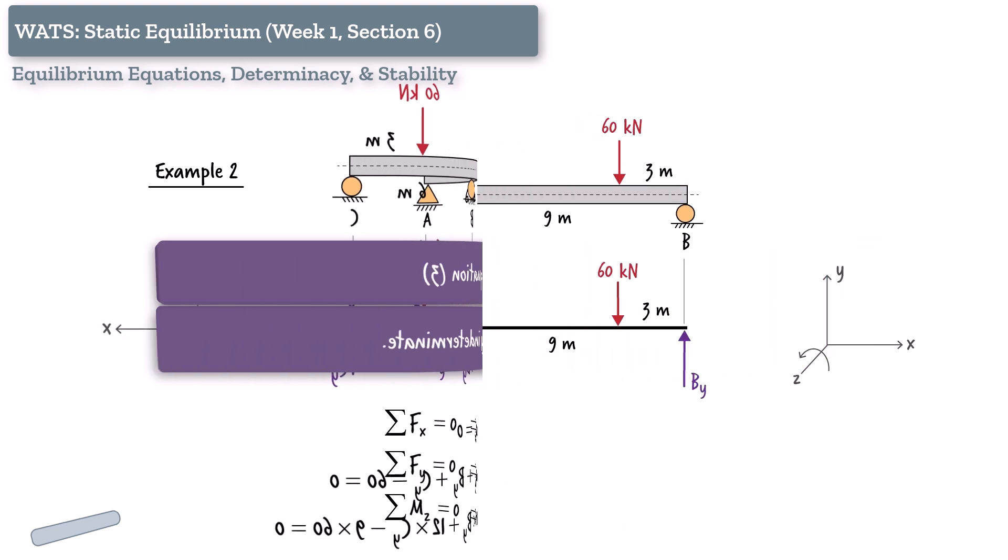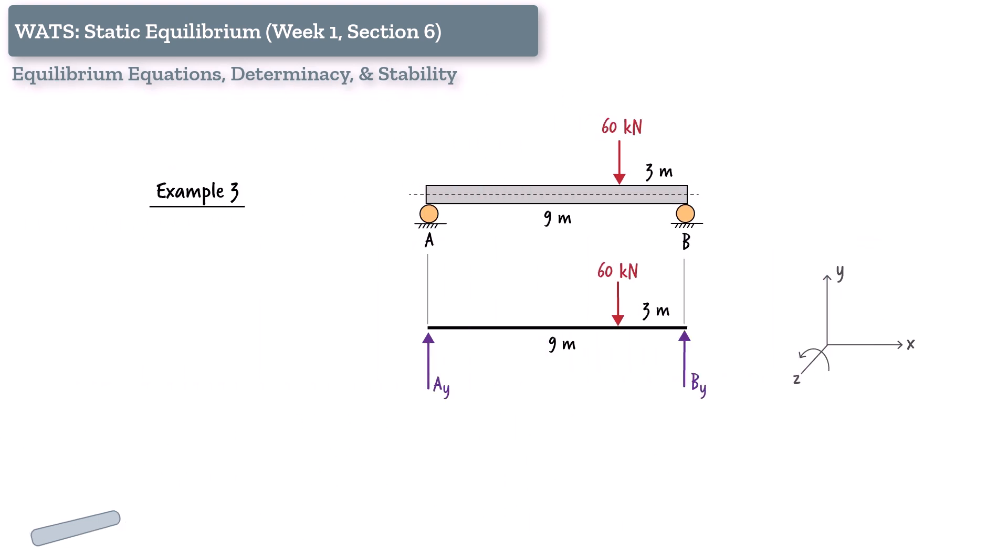Let's try another support configuration. What if the beam is supported only by two roller supports? Each roller provides just one vertical reaction, giving us a total of two unknowns. The three static equilibrium equations are, but since the free body diagram does not show any force in the x direction, the first equation is automatically satisfied. So we are left with two equations.